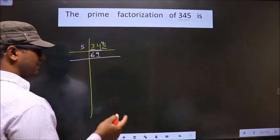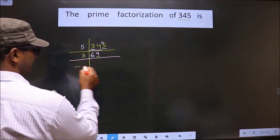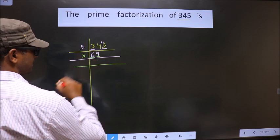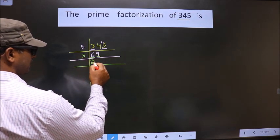So you take 3 here. Now, the first number is 6. When do you get 6 in the 3 table? 3×2=6.